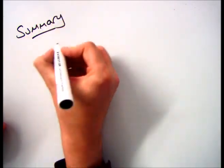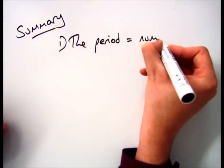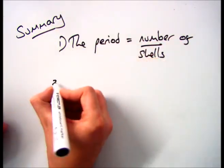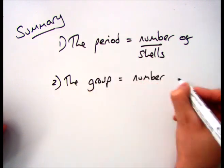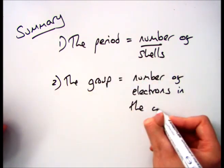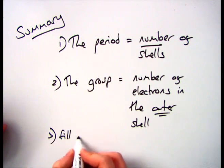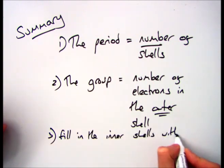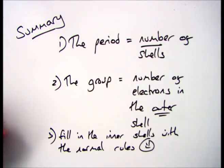So in summary then, what you guys need to be able to remember is that the period is the number of shells you have to draw. The group is the number of electrons you put on the outer shell and then the rest is just filling it in based on the rules. So 2 in the first, 8 in the second, 8 in the third.